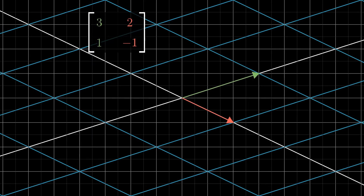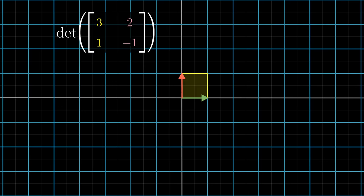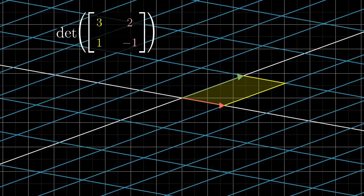The determinant is all about measuring how areas change due to a transformation. And the prototypical area that we look at is the unit square resting on i hat and j hat. After the transformation, that square gets turned into the parallelogram that we care about.